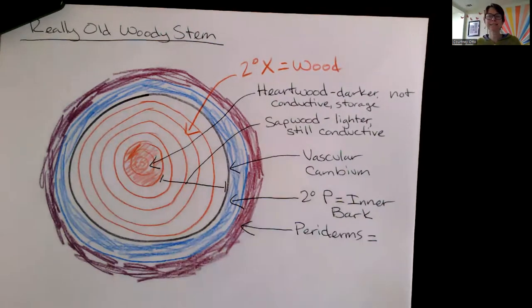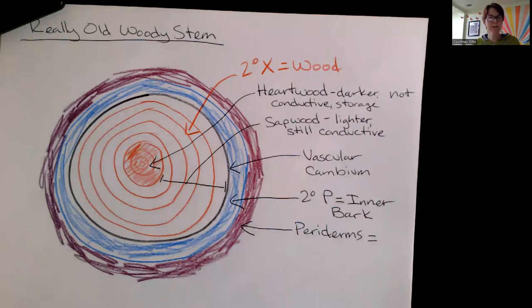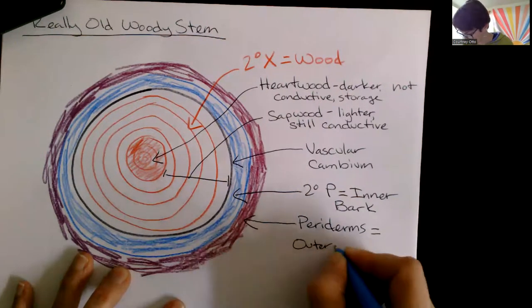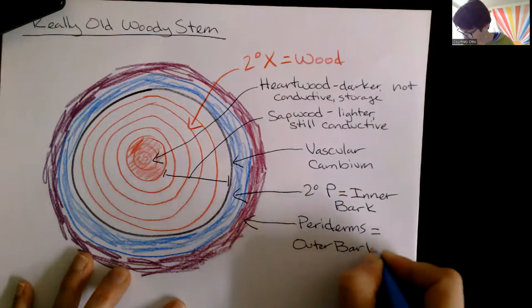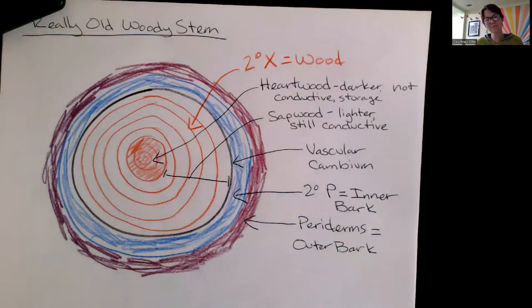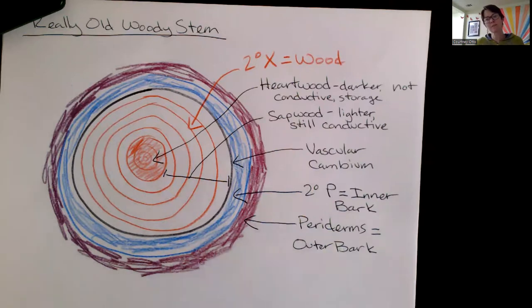The term periderm is synonymous with outer bark. It's what's forming the outside of our tree. It's largely dead. Oftentimes when you go up to a tree and you kind of flake off the outside of the bark, you're kind of flaking off those periderm layers or those outer bark layers.